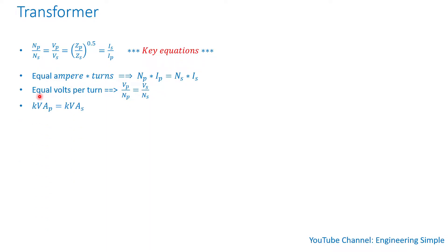Power in equals power out. The power in the primary winding is equal to the power in the secondary winding. Obviously we are ignoring losses, which are not a lot.